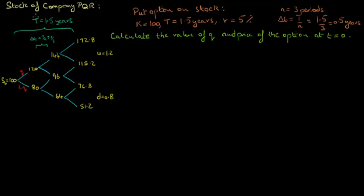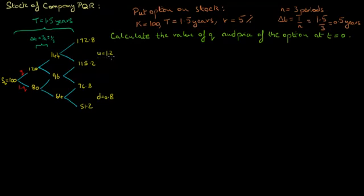We are given some information on the stock of company PQR. We have a three-period binomial tree that shows possible prices the stock could take over the next three periods of six months each. Currently the stock price, denoted by S0, equals 100, and in each period the stock price could go up by a factor U which equals 1.2, or go down by a factor D which equals 0.8.